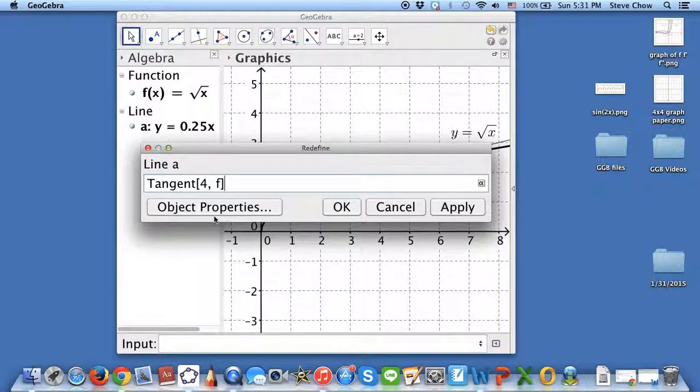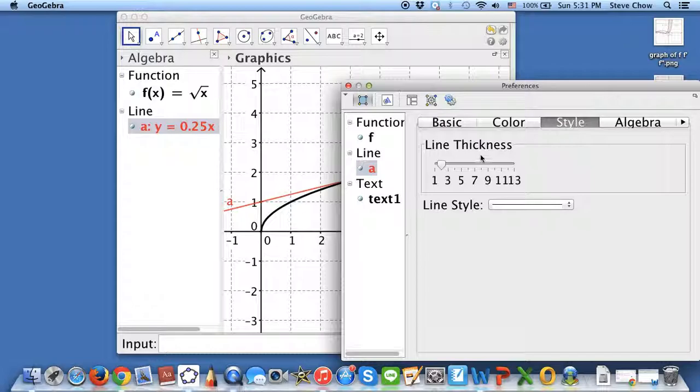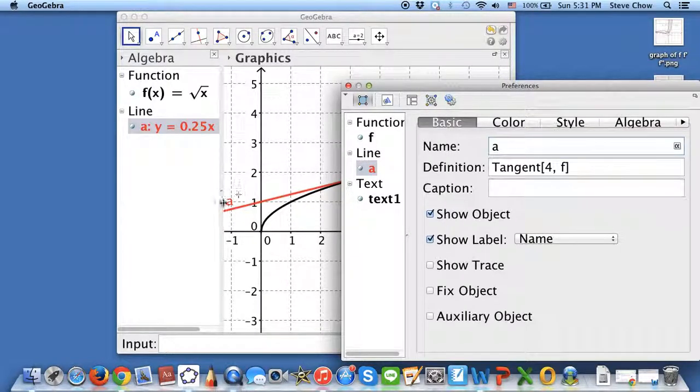Double click on the tangent line. Object property. Go to color. Let me make this red. And let me make this slightly thicker, but not as thick as 7. And let me just get rid of the a, because it doesn't make sense.